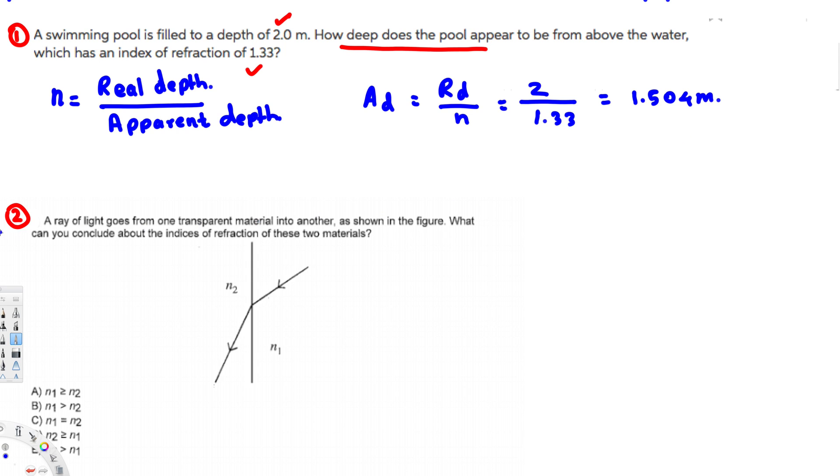Now let's look at the second question. The second question is asking: a ray of light goes from one transparent material into another as shown in the figure. What can you conclude about the indices of refraction of these two materials?